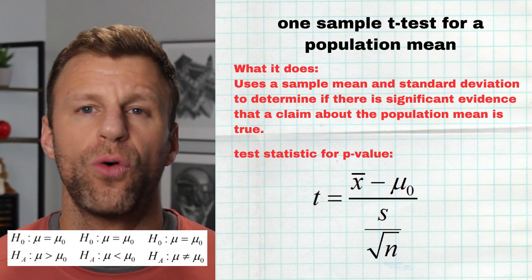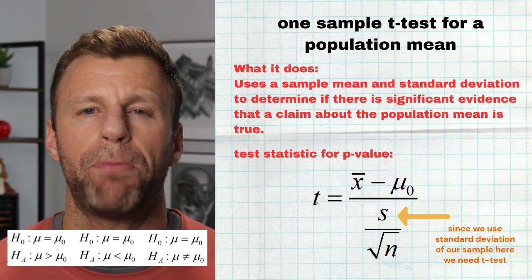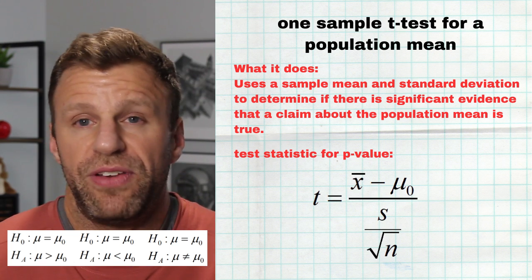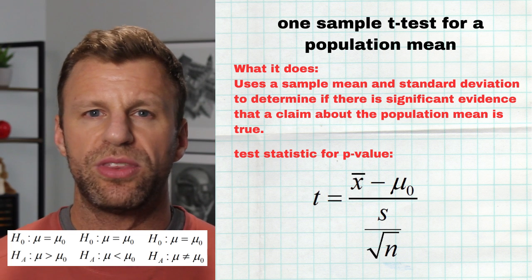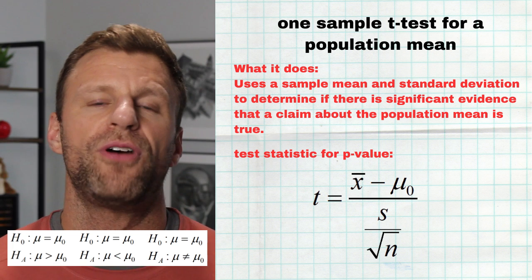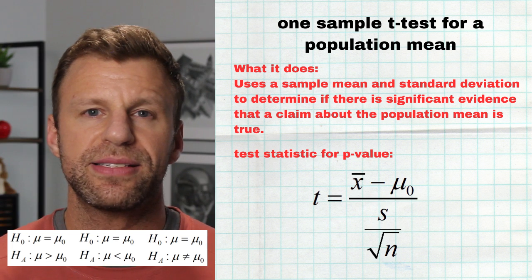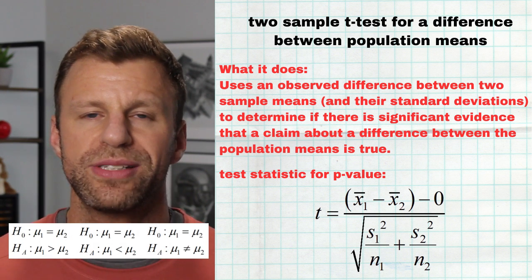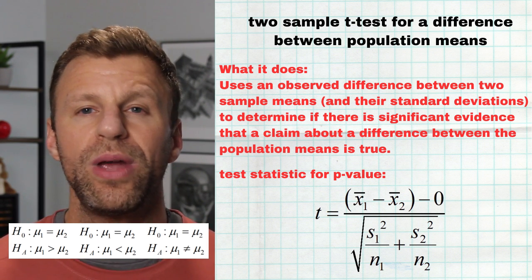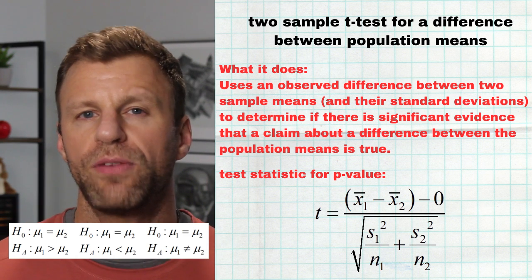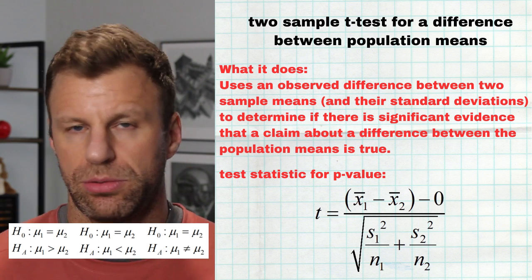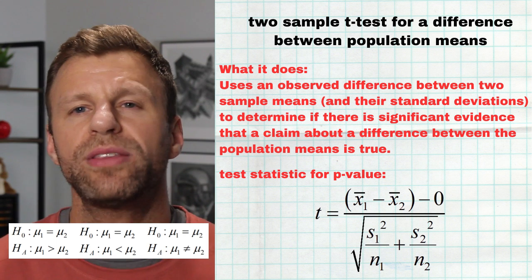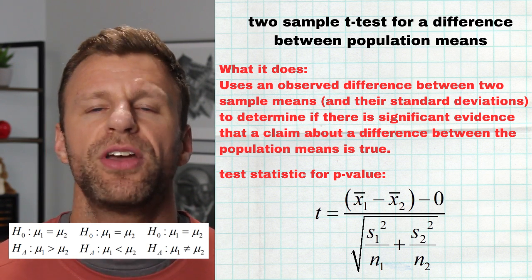Next up is a one-sample t-test for a population mean. We use a t-test rather than a z-test because we typically don't know the population standard deviation in AP stats. We believe or read what a population mean might be, but we claim it's lower, higher, or not equal to it. We get a sample mean, find where it falls on the sampling distribution built on the null being true, get the t-score, find the p-value, and make our conclusion. Next is a two-sample t-test for the difference between population means — the null is that the two means are equal, the alternative is one is more or less than the other. We take our observed difference, subtract zero, divide by standard error, find the p-value, and make our conclusion.